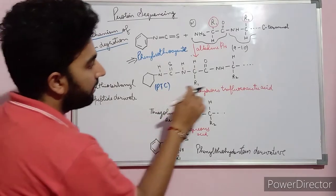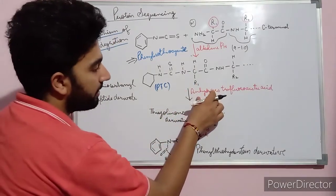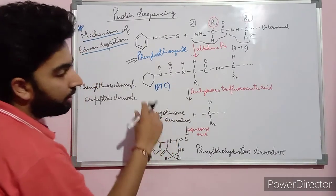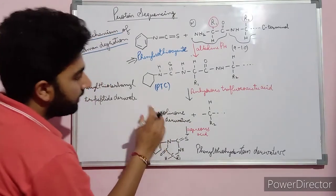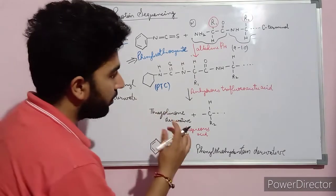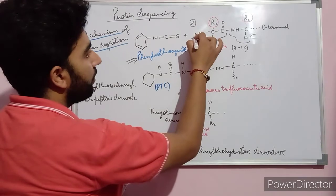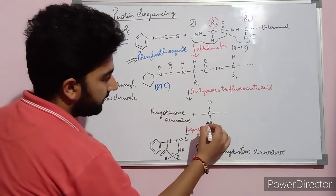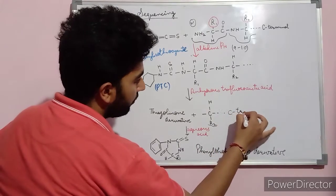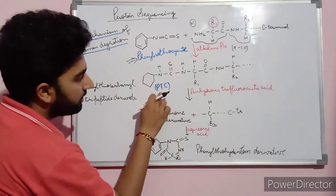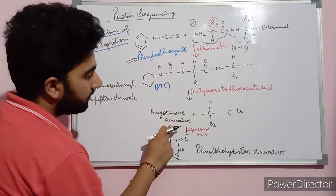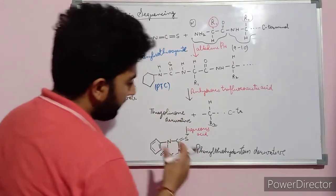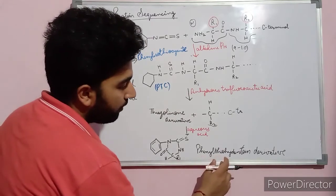This PTC, in the presence of acidic solution — in presence of anhydrous trifluoroacetic acid — in this acidic medium, it forms the thiazolinone derivative. The thiazolinone derivative is a structural component that consists of the N-terminal amino acid from the whole peptide chain, while the second amino acid and so on up to the C-terminal remain. The first amino acid from the N-terminal end combines with this PTC and forms a thiazolinone derivative. This thiazolinone derivative, further in the presence of aqueous acid, reforms into another compound known as phenylthiohydantoin (PTH).